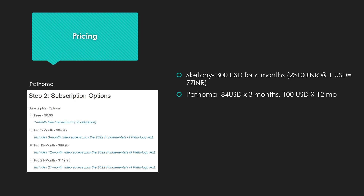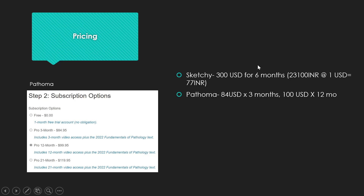Talking about the pricing: Pathoma is reasonably priced at $100 for a 12-month subscription, and they will also ship you the physical Pathoma textbook. Sketchy is a bit costlier at $300 for 6 months, but the good thing is that you get a bundle package of Sketchy Pharma, Micro, and Pathology, and it also includes clinical topics. I can surely vouch for Sketchy Micro and Pharmacology, and some aspects of Pathology as well.